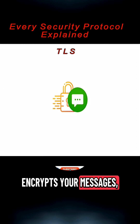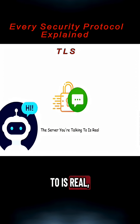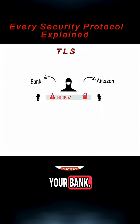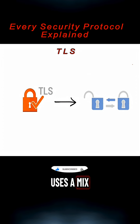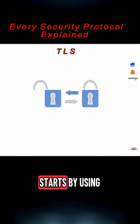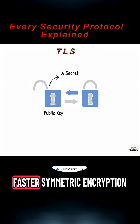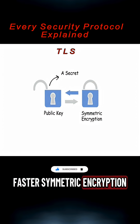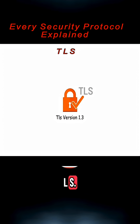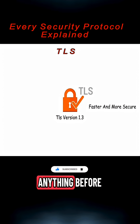TLS not only encrypts your messages, but it also verifies that the server you're talking to is real — not a fake website pretending to be Amazon or your bank. TLS uses a mix of symmetric and asymmetric encryption. That means it starts by using a public key to exchange a secret, then switches to faster symmetric encryption once the connection is safe. We're now on TLS version 1.3, which is faster and more secure than anything before.